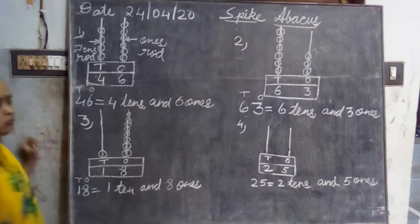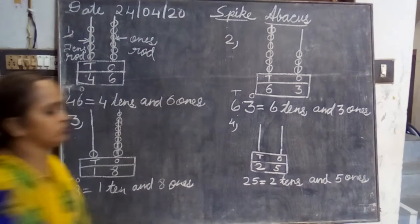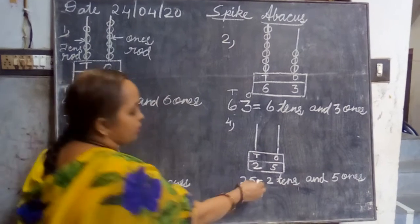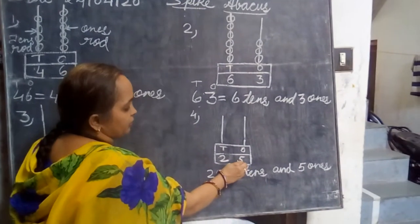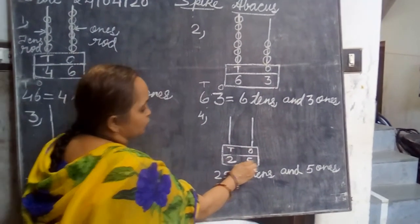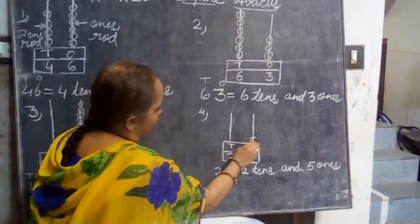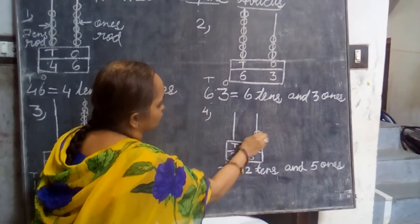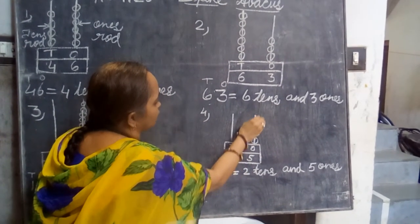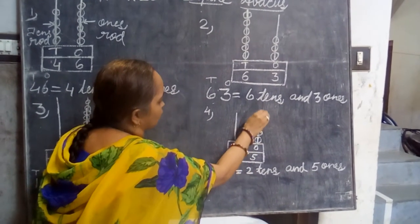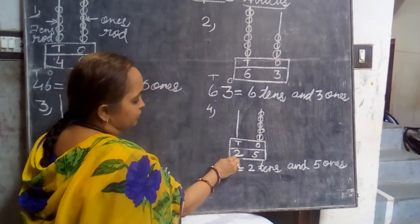Clear? Let us go for another example of the same. Here the number at ones place is five. So we will draw five spikes: one, two, three, four, five. Okay dear?